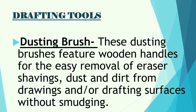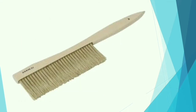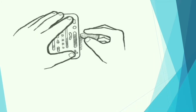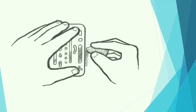Next is the dusting brush. This dusting brush has an official wooden handle for the easy removal of razor shavings, dust, and dirt from drawings or drafting surfaces without smudging. It's as simple as a brush. Next, the erasing shield — a useful tool to protect the rest of the drawing when making an erasure. If you want to erase only a specific part, you can use the erasing shield.